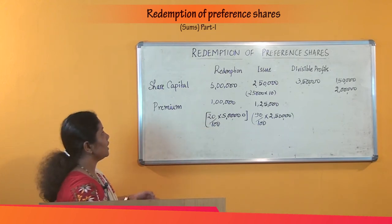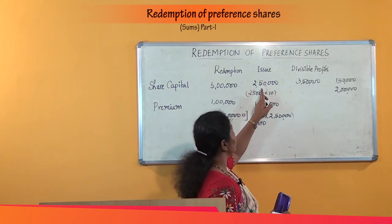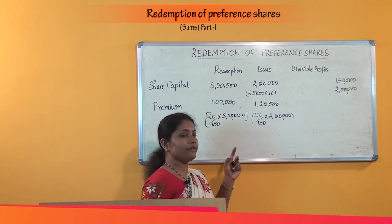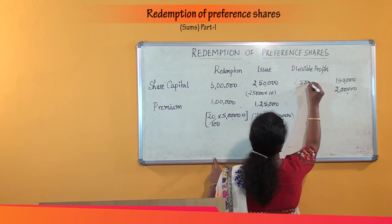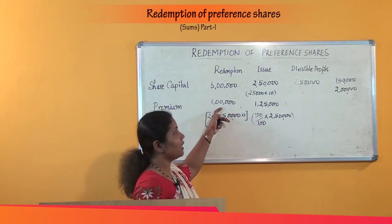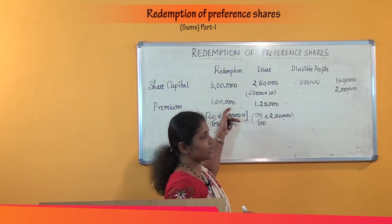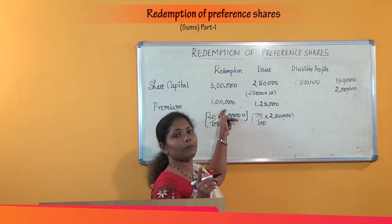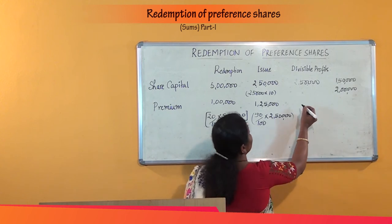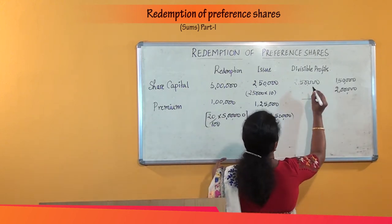The preference share capital to be redeemed is Rs. 5,00,000. Proceeds from issue of shares is Rs. 2,50,000, so the amount to be utilized from divisible profits is the remaining Rs. 2,50,000. The premium on redemption is Rs. 1,00,000, and the securities premium on fresh issue is Rs. 1,25,000, which is greater than the premium on redemption. So the entire premium on redemption can be provided from the securities premium account balance of Rs. 1,25,000, and we need not use divisible profits for the premium.